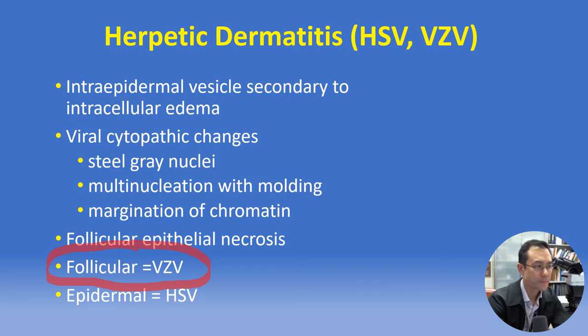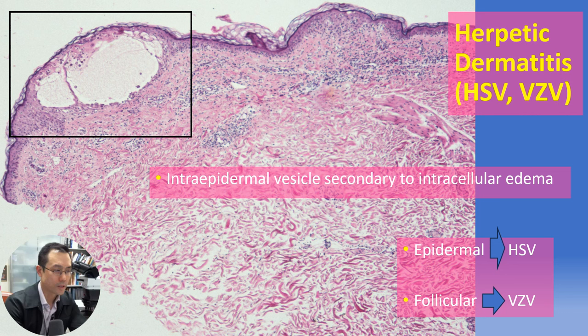Sometimes as pathologists we must make a histologic diagnosis before culture or molecular results are available. At low magnification we can appreciate an intraepidermal vesicle, and on closer inspection we can determine it's secondary to intracellular edema rather than intercellular edema or spongiosis. These changes can occur in the epidermis or in follicular epithelium.